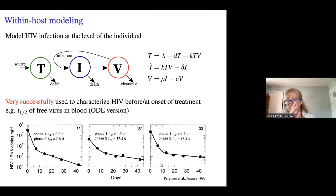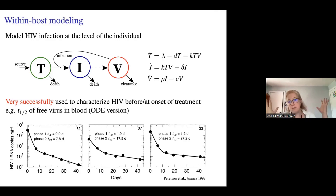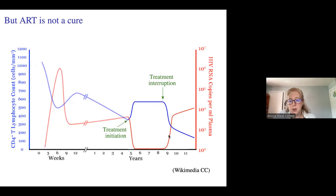When these treatments first came out there was great excitement. Initial calculations on the exponential decay phase suggested that after six months you'd be cured. We know now that was not the case. If you interrupt or stop treatment, viral loads recover, CD4 counts drop, and infection progresses. This is the typical case.